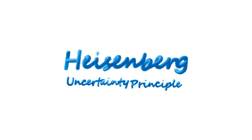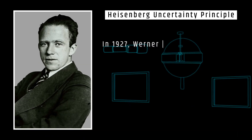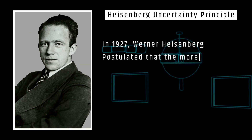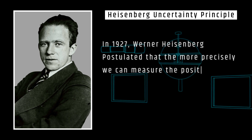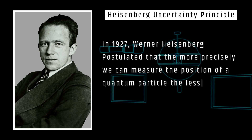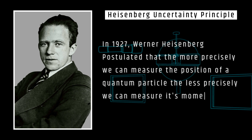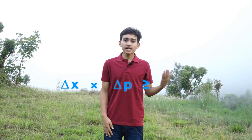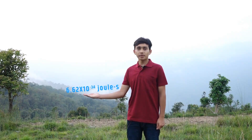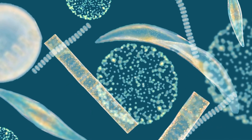Heisenberg Uncertainty Principle. In 1927, Werner Heisenberg postulated that the more precisely we measure the position of a quantum particle, the less precisely we can measure its momentum, as stated by the equation: delta x multiplied by delta p is greater than or equal to h upon 4pi. While it doesn't hold much significance in the macroscopic world due to the extremely small value of h, it rules in the microscopic world.